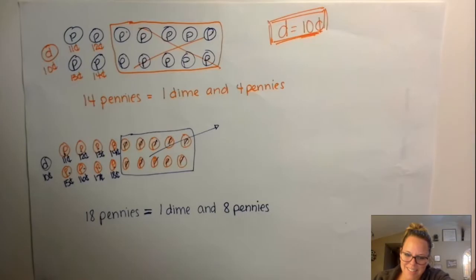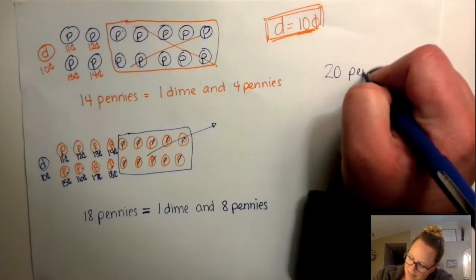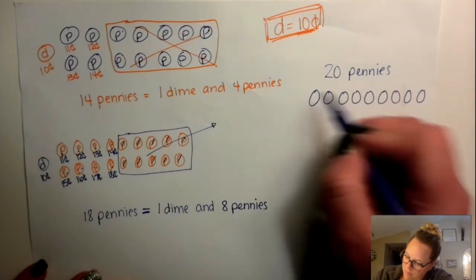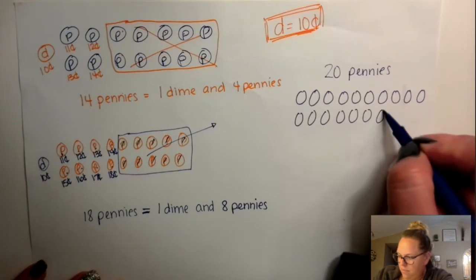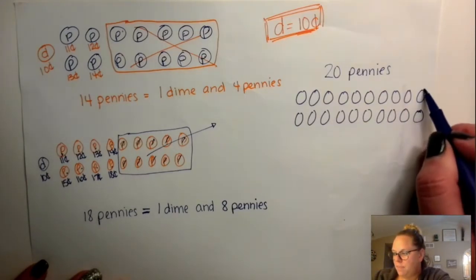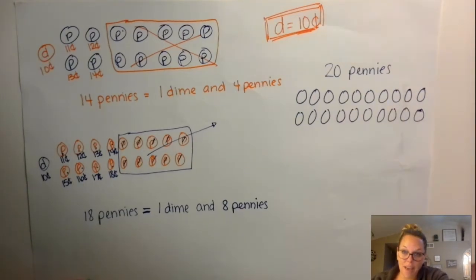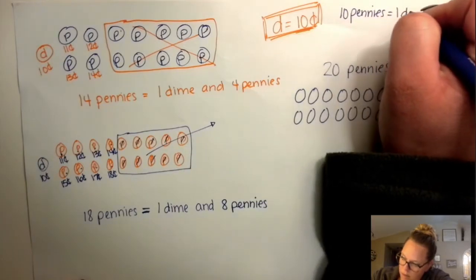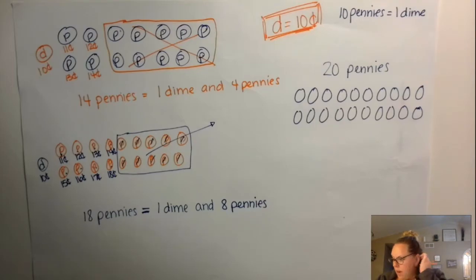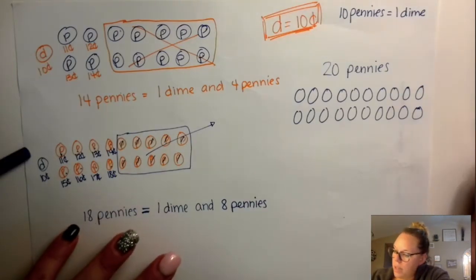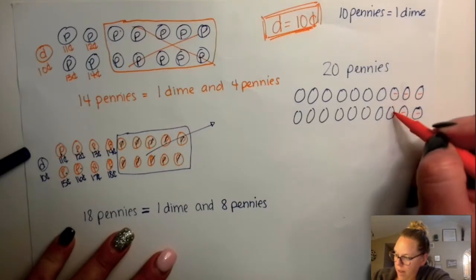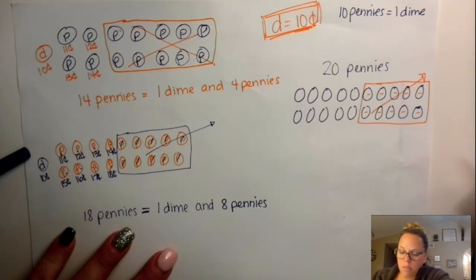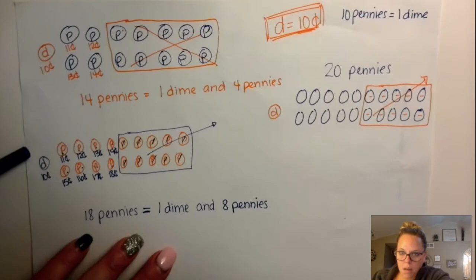What if I had 20 pennies? These are all pennies. I want to trade the pennies for dimes if I can. How many pennies do I need to equal a dime? I need 10 pennies to equal one dime. So I need to count out a group of 10 pennies to replace it for a dime: 1, 2, 3, 4, 5, 6, 7, 8, 9, 10. I took those out and I have to replace them with a dime. Now that's 10 of them.